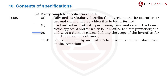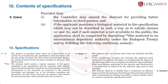The complete specification should end with a claim or claims defining the scope of the invention for which protection is claimed. Section 10(4)(d) mentions that the complete specification shall be accompanied by an abstract to provide technical information on the invention. What should be in the abstract is detailed in Rule 13. The controller has the power to amend the abstract if the information provided is not clear, or if the controller feels that amending the abstract will better communicate information to third parties.